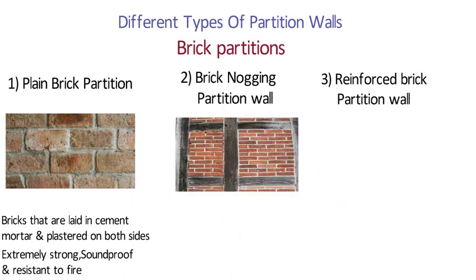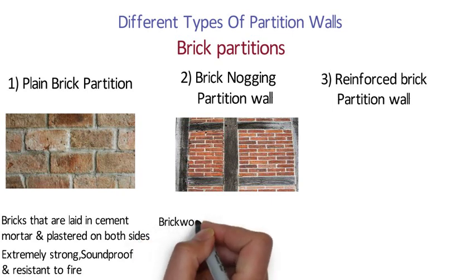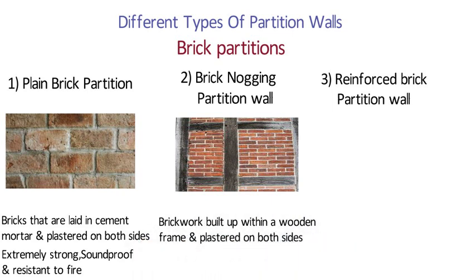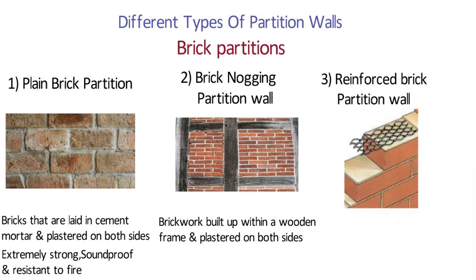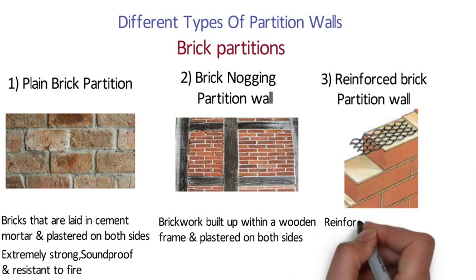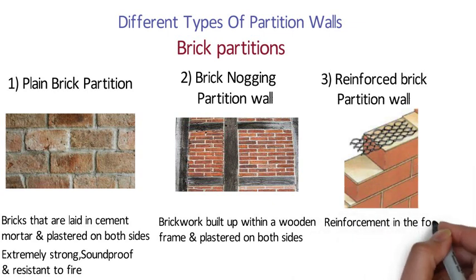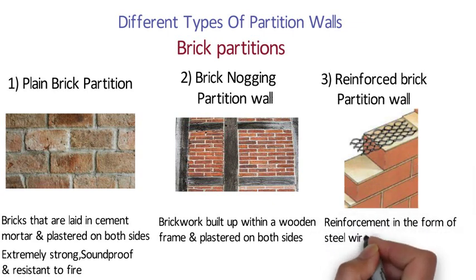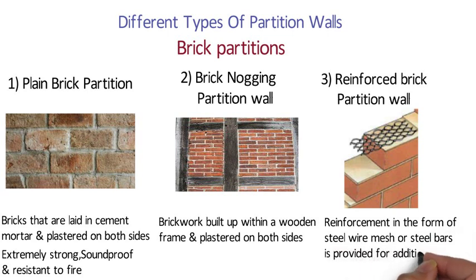A brick nogging partition consists of brickwork built up within a wooden frame and plastered on both sides. In a reinforced brick partition, reinforcement in the form of steel wire mesh or steel bars is provided for additional strength. Brick walls are known for their strength and can hold lots of shelves, wall cabinets and paintings.